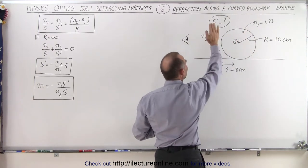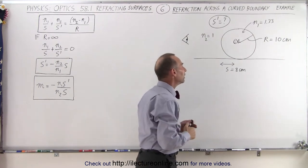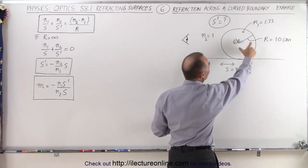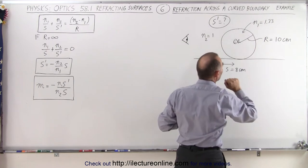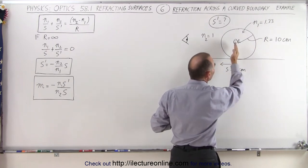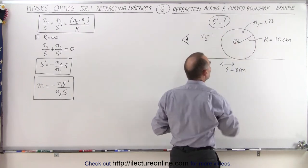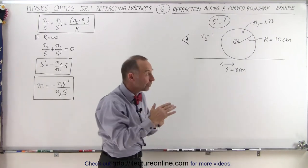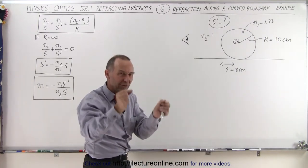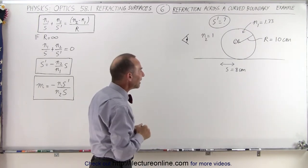On the outside we have air. Index of refraction is 1. Notice that the radius of the fishbowl, which is a spherical fishbowl, is equal to 10 centimeters, and the distance from the fish, the object, to the edge, the boundary between the air and the water. We can ignore the glass because it's very thin, is 8 centimeters.